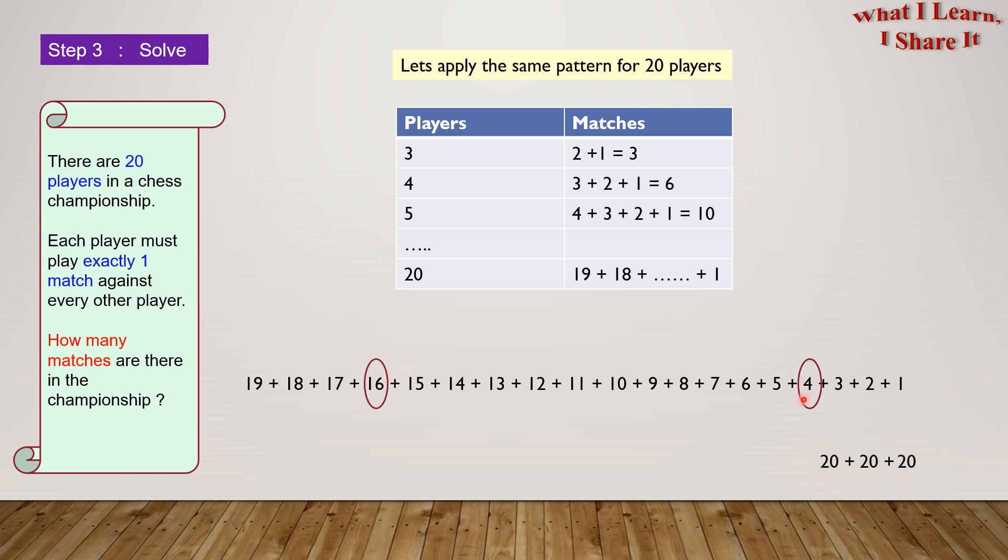16 plus 4 also equals 20. 15 plus 5 gives us another 20. And 14 plus 6 equals 20. 13 plus 7 gives us also 20. 12 plus 8 equals 20. 11 plus 9 equals to the final 20. And since there's 10, it doesn't go with anyone, so we could just add the 10.